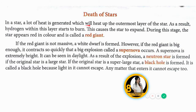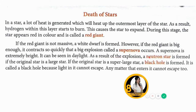In a star, a lot of heat is generated, which heats up the outermost layer. Hydrogen within this layer starts to burn, causing the star to expand. During this stage the star appears red and is called a red giant. If the red giant is not massive, a white dwarf is formed. If it is big enough, it contracts so quickly that a supernova occurs — extremely bright, visible in daylight. A neutron star forms if the original star is large; a black hole forms if the original star is super large, because light inside cannot escape.